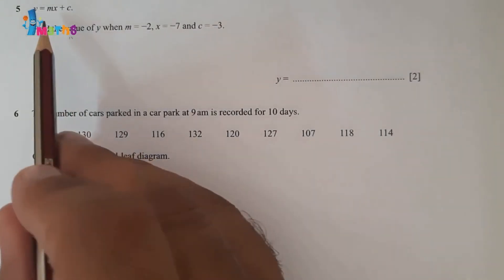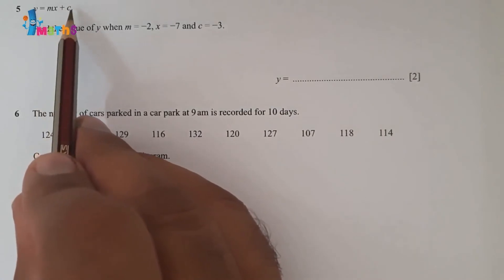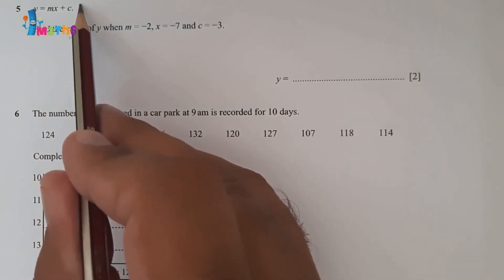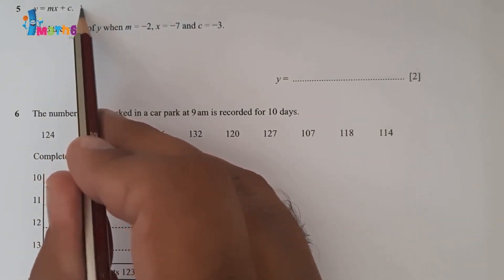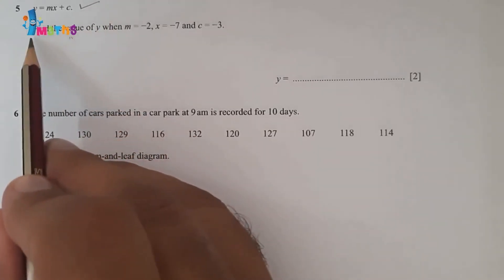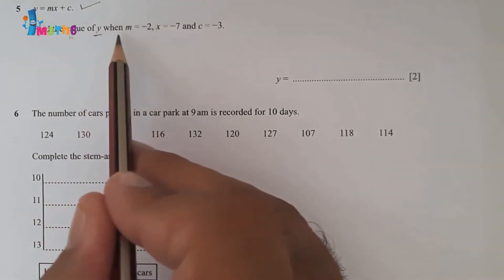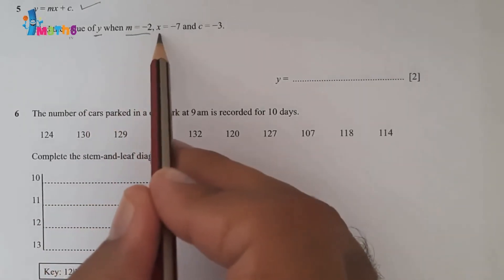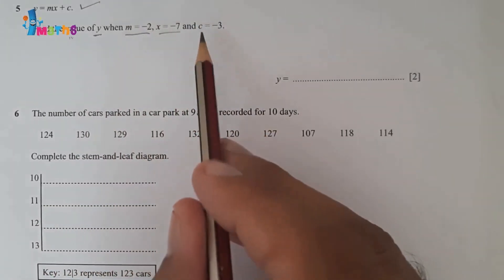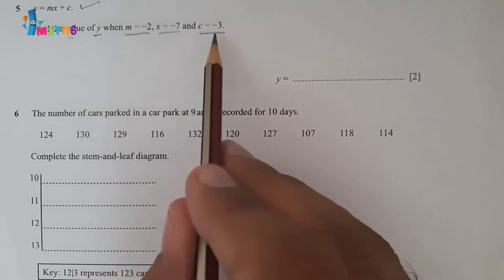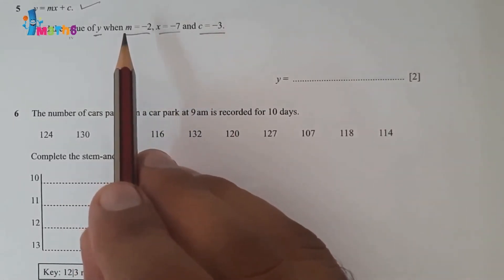Question number 5: y equals mx plus c. This is the equation of a line in slope-intercept form. Find the value of y when m equals minus 2, x equals minus 7, and c equals minus 1. Basically all three values are given; we have to replace these values in the given equation.